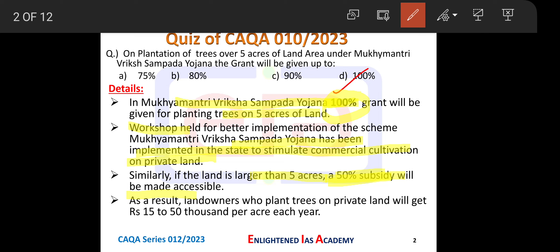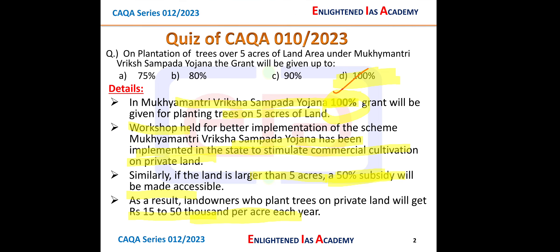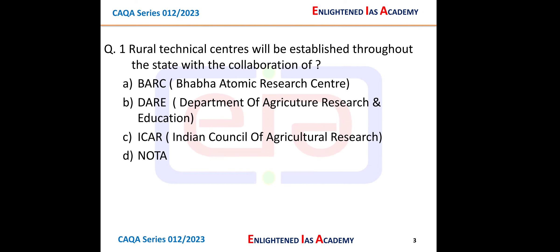Land owners who plant trees on private land will get rupees 15,000 to 50,000 per acre each year. So that was Mukhyamantri Vriksha Sampada Yojna — in this scheme, the government is giving a 100% grant. Please remember this. Now let's start today's session. Our first question today is: